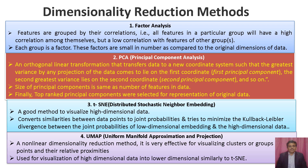The next slide shows different types of dimensionality reduction methods. The first one is factor analysis. In factor analysis, features are grouped by their correlations — all features in a particular group will have high correlation among themselves but low correlation with features of other groups. Each group is a factor. These factors are small in number compared to the original dimensions of the data. The next important dimensionality reduction method is Principal Component Analysis, PCA.